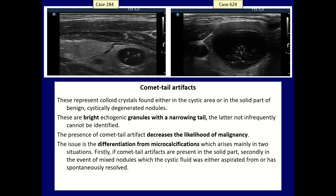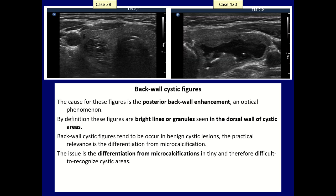The next form is the comet tail artifact, which has already been discussed two weeks ago. I emphasize here only the main concern: comet tail artifacts quite frequently lack the characteristic tail and can occur within solid parts of a cystic nodule, but the differentiation from microcalcification is a real concern.